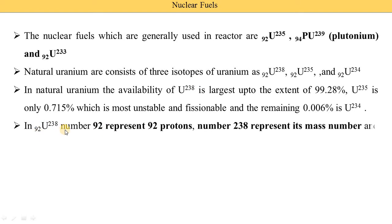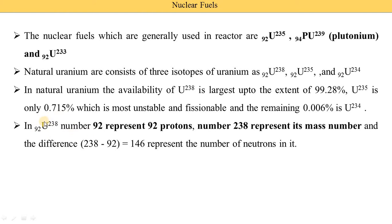In 92 Uranium-238, the number 92 represents 92 protons — this digit indicates the proton count. As you can see, we also wrote 94 Pu-239, where 94 represents the protons, and 92 also represents the protons. The number in the suffix — 235, 239, 233, or 238 — represents the mass number.